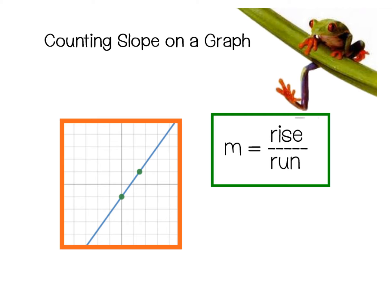If we have a line on a graph, we can actually just count the slope. We're going to look at rise over run. We look again from left to right. One thing I want to adjust on this picture is this point right here is not very good because it doesn't go right through the crosshairs, so I'm going to use this point instead. I need to count the rise over run going from the first point on the left to the point on the right. It had to go up four and to the right three. So my rise over run is four over three, which means my slope is four-thirds.